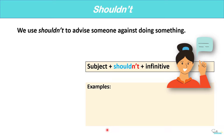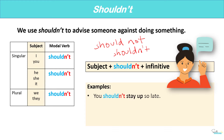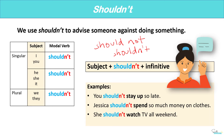Now let's look at shouldn't. We use shouldn't to advise someone against doing something. Shouldn't is the opposite of should. Shouldn't is formed with should plus not — 'should not' or 'shouldn't'. Let's look at some examples: You shouldn't stay up so late. Jessica shouldn't spend so much money on clothes. She shouldn't watch TV all weekend.